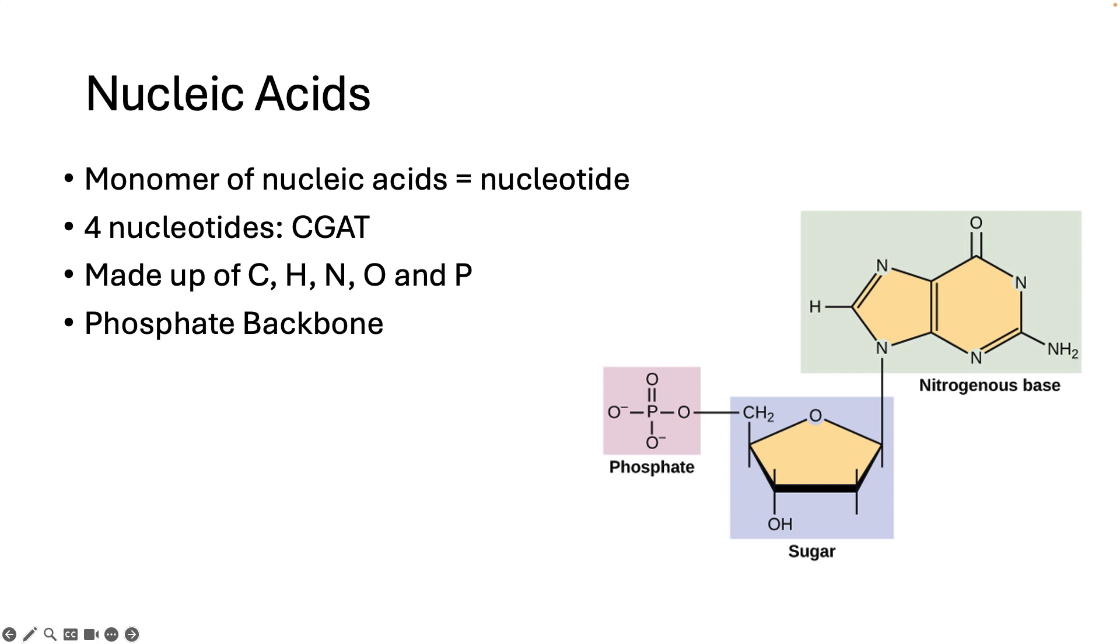The monomer of nucleic acids is the nucleotide. In the case of DNA, there are four different nucleotides: cytosine, guanine, adenine and thymine.